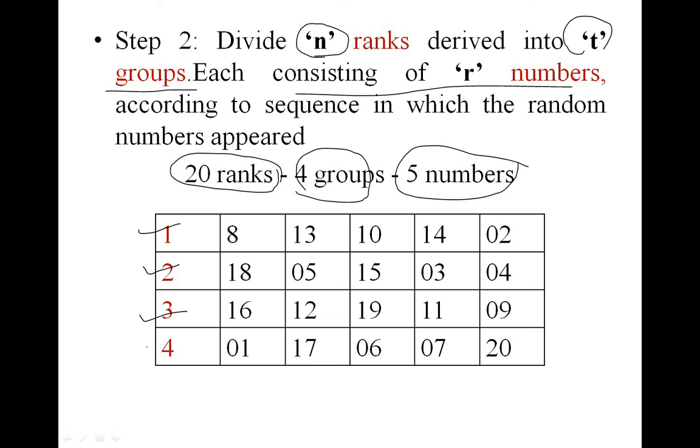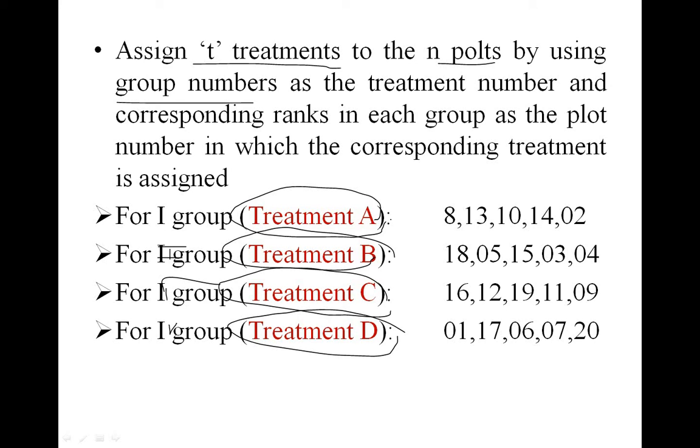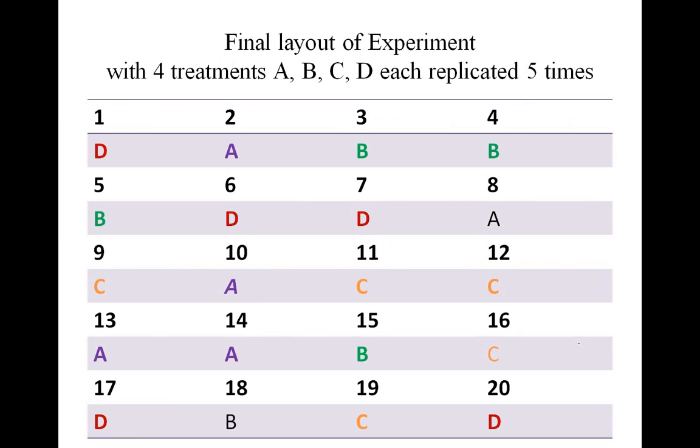We have four total groups, each with five numbers. For this final layout of experiment, we assign T treatments to the N plots by using group numbers. For group one we assign treatment A, for group two treatment B, group three treatment C, and group four treatment D. Each treatment has five numbers, so there is equal distribution.